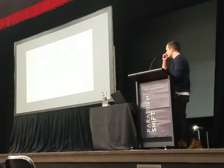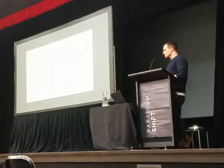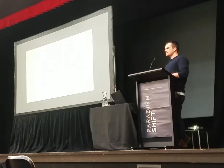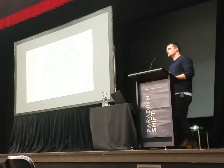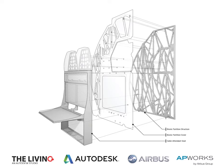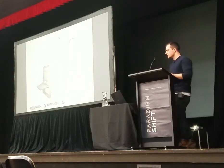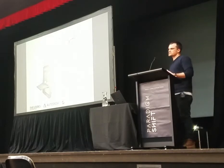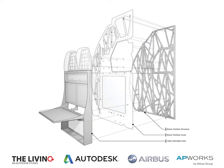The A320 Bionic Partition came out of a collaboration between our group at Autodesk and a research group at Airbus. The goal was to leverage innovations in manufacturing — specifically metal additive manufacturing and 3D printing at Airbus — with innovations in software design tools at Autodesk. As a first prototype, we chose this component: the partition wall inside the cabin, the thing usually between you and the bathroom. It seems like a banal piece of structure, but this component offers a few very difficult structural problems.